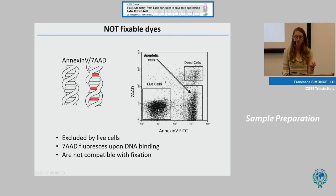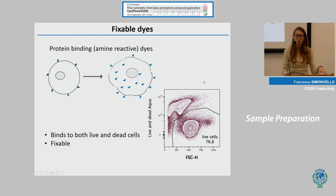Live cells will be negative for both 7-AAD and Annexin V; apoptotic cells will be Annexin V-positive but 7-AAD-negative; dead cells will be double-positive for both 7-AAD and Annexin V. A limitation of this labeling is that these dyes are not compatible with fixation. A solution is to use fixable dyes, which bind to proteins — live cells become bright but dead cells become brighter — allowing you to clearly distinguish live from dead cells even after fixation.